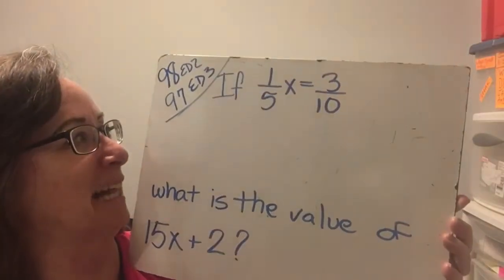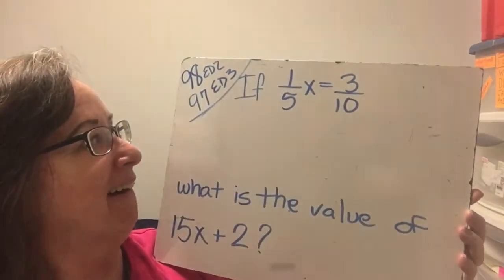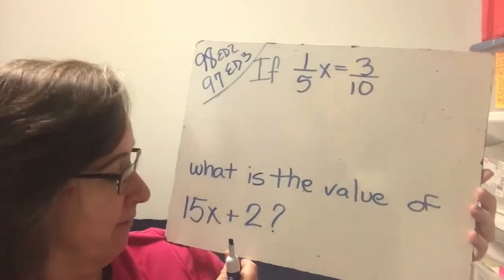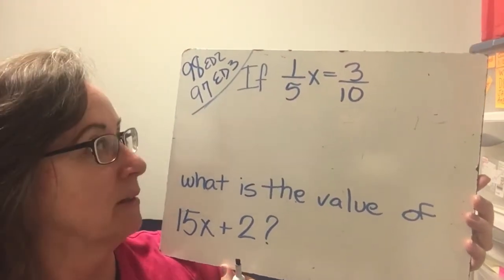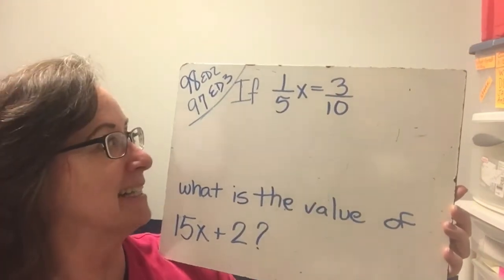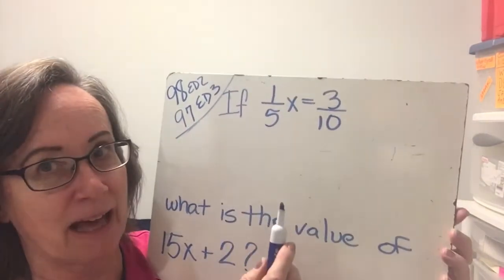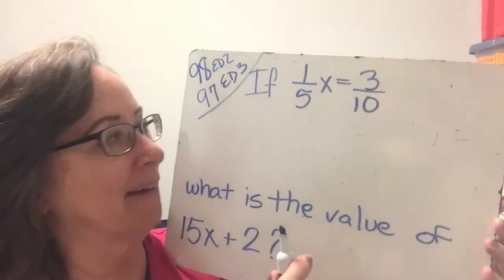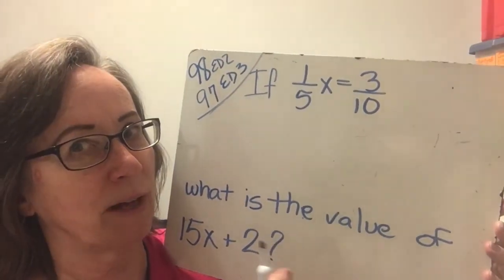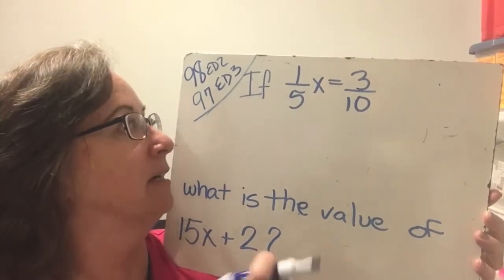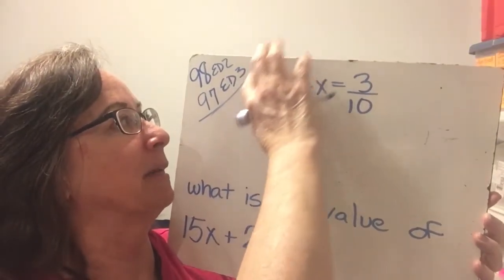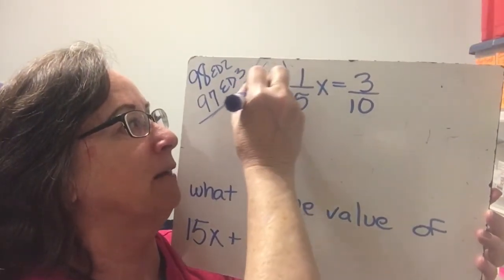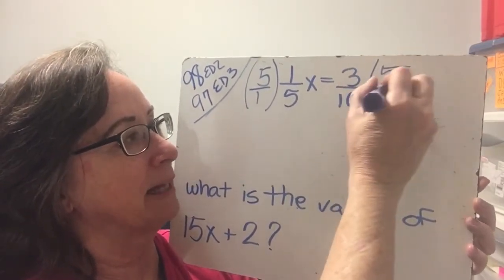Here is the last practice problem for you. If 1 fifth x is 3 tenths, what is the value of 15x plus 2? So we have to solve this to be able to find this. So now look at this. We have an x by itself except for the 1 fifth that it's multiplied by. What if I got rid of the 1 fifth by multiplying both sides by 5? I want to get rid of the 1 fifth, so I'm going to multiply by 5 over 1, which is the reciprocal. And I must do the same thing on the other side.